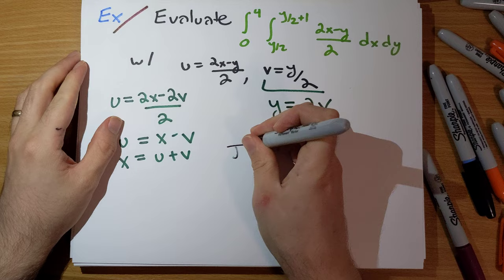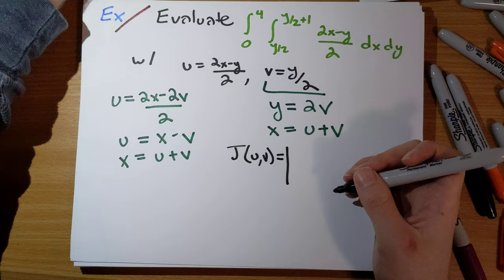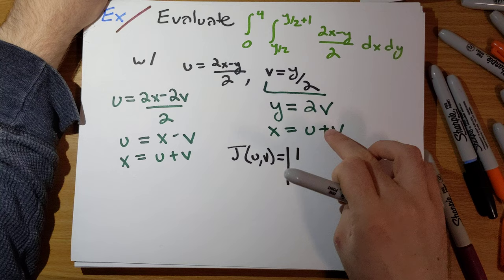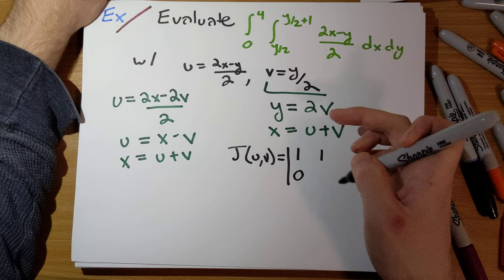So j of u, v, the determinant of, let's see, the partial derivative of x with respect to u is 1. Partial derivative of x with respect to v is 1. Partial derivative of y with respect to u is 0. And the partial derivative of y with respect to v is 2.